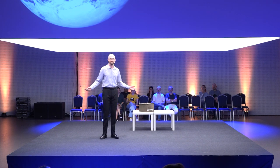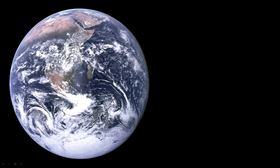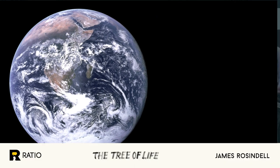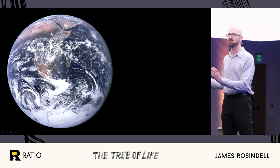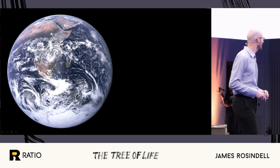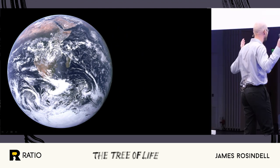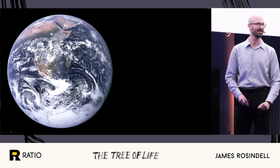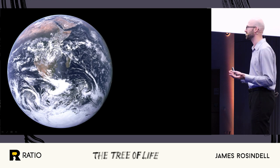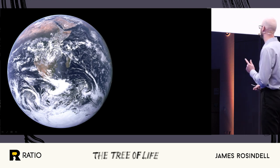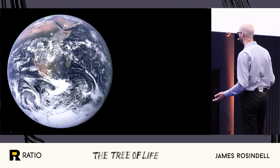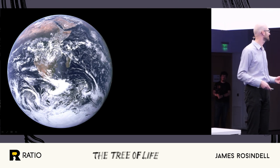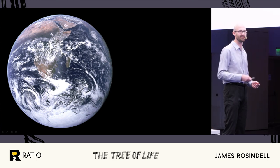So this is our home, planet Earth. And if we want to organize all the geography, all the different places on Earth, that's pretty much solved. You can go online, find a map, zoom in to Europe and then to Bulgaria and then to Sofia and then to the tech park, pretty easily. We know where everything is. But what about all life on Earth, all the living things, all the different species — what about organizing them?